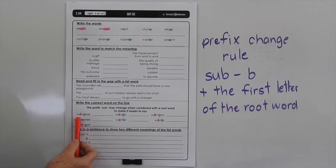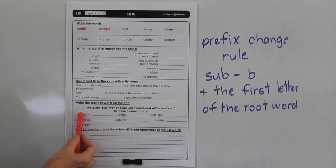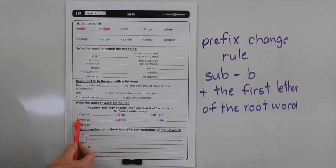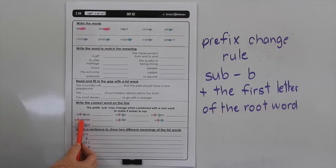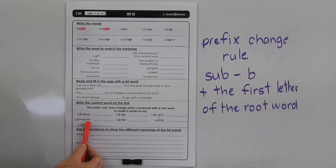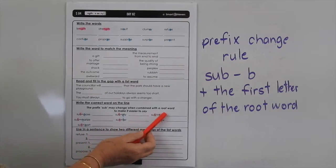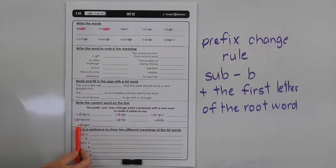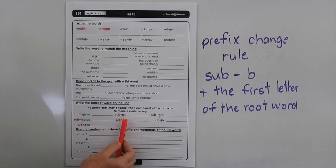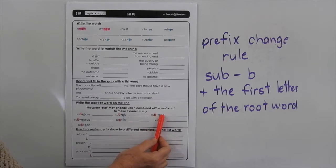There aren't an awful lot of prefixes, but because of the prefix change rule, we know that we have the right to change these letters, which makes them easier to say. So summarise — that sounds awkward — so we're allowed to change the B to match the first letter of the root, so it would be summarise. Do be aware of that as you're writing the new words. You'd have support, supply, suffer, summon, and suffix.